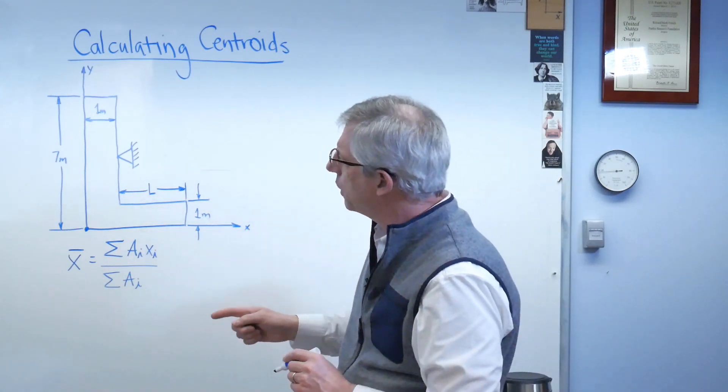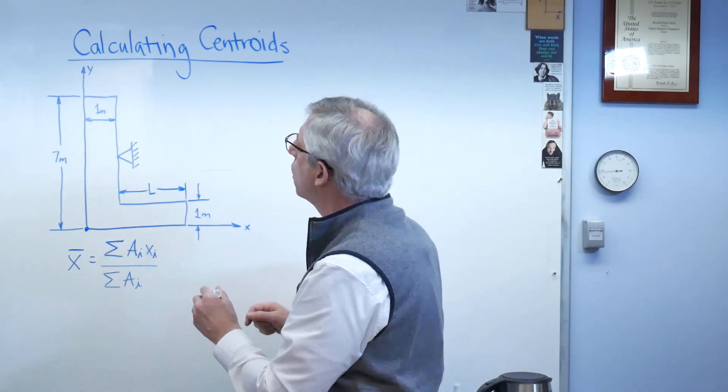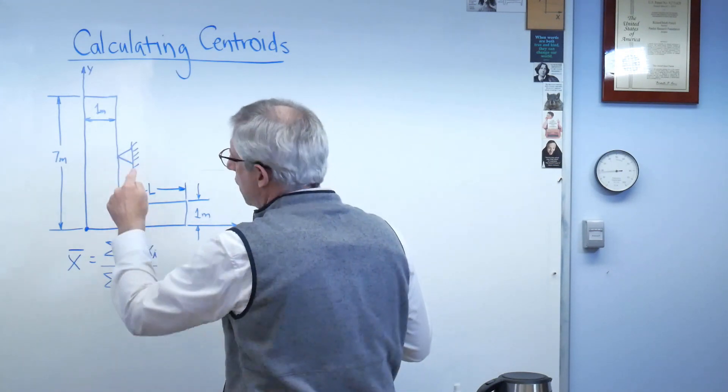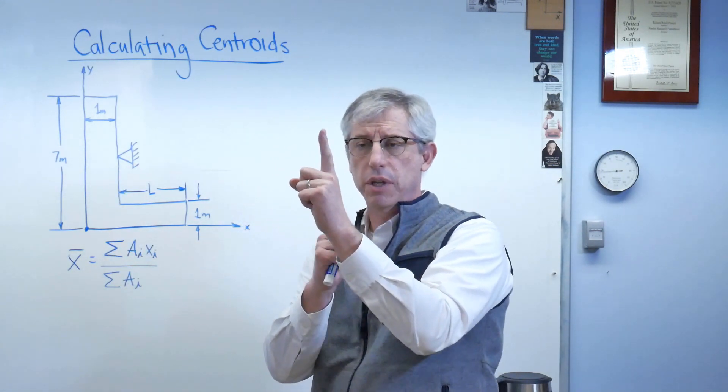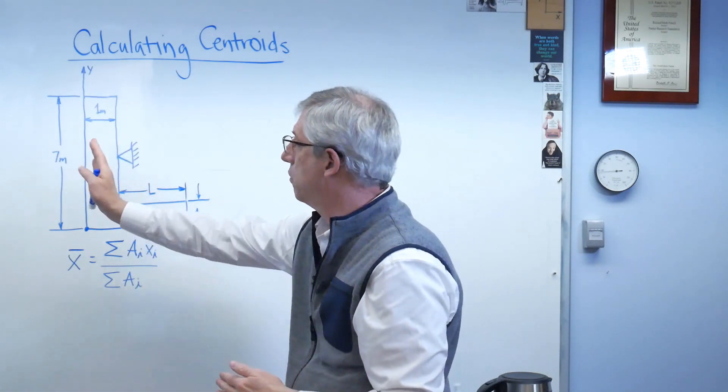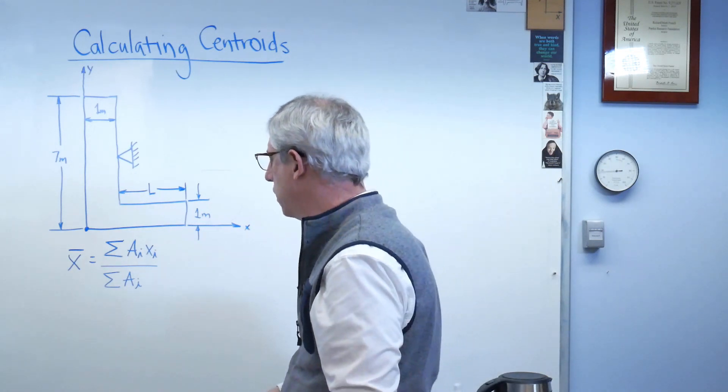So why do I only need x-bar? I don't care what y-bar is. Well, all that I need to know is that the centroid is right below that pin. If the centroid lies right below the pin, this structure will hang either vertically or horizontally, depending on how you want to write it.